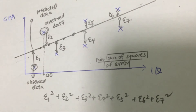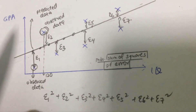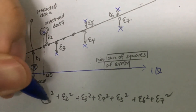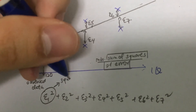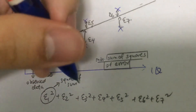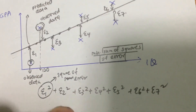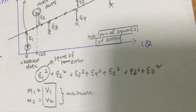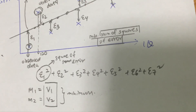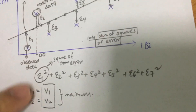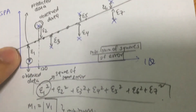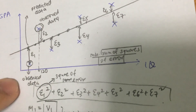What we are trying to do is find a particular model such that it gives the minimum sum of squares of errors. This is the sum of squares of error — we are summing all of them. Let me just recap: the idea of the least square criterion is to find a particular model such that it gives the minimum sum of squares of errors, where the errors are the difference between the predicted data and the observed data.